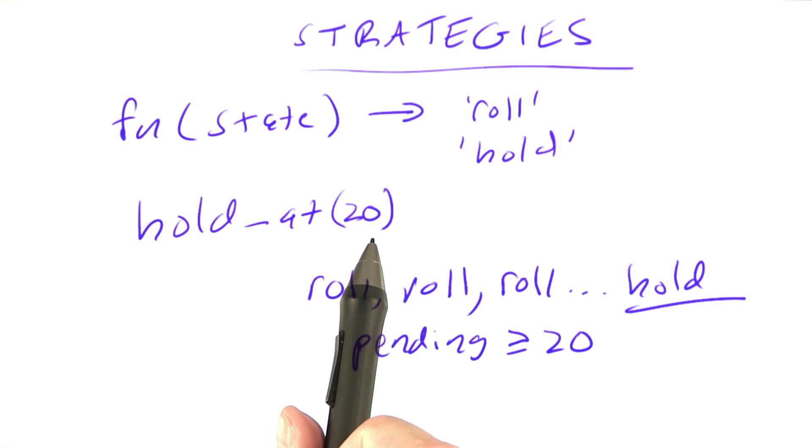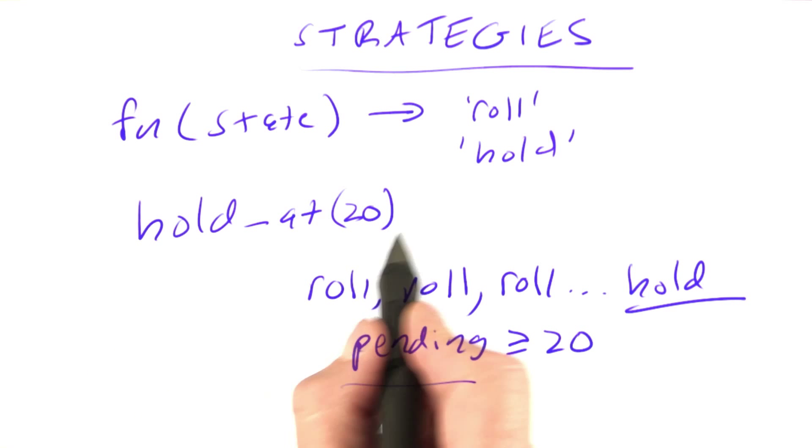And the point of this strategy is you get points by rolling, but you risk points by rolling as well. And the higher the pending score is, the more you're risking. So there should be some point at which you're saying that's too much of a risk. I've accumulated so much pending that I don't want to risk any more, and then I'm going to hold. So hold at 10, hold at 20, hold at 30 describes that family of strategies.